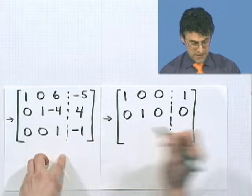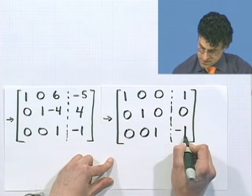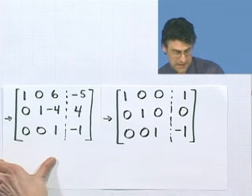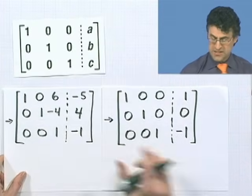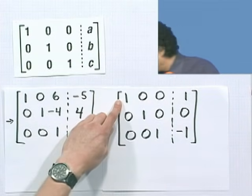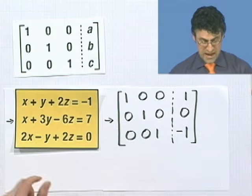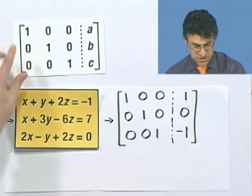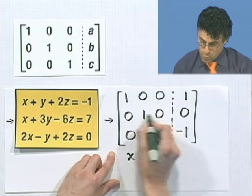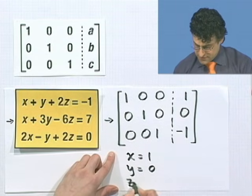And the last one is all set. I think I survived this. I get to this augmented matrix. This is exactly the form we desire because now we can just read off the answer. This tells me x equals 1, y equals 0, and z equals negative 1.